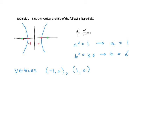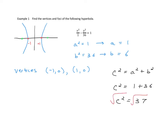Now for the foci, we use c squared equals a squared plus b squared. Here a squared is 1 and b squared is 36, so c squared equals 1 plus 36, which is 37. Taking the square root, c equals the square root of 37. So the two foci are at (negative square root of 37, 0) and (positive square root of 37, 0).